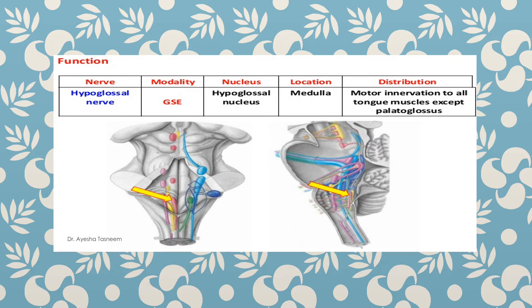The hypoglossal nerve has got only one nucleus that is present in the medulla, and this nerve supplies all the muscles of the tongue except the palatoglossus.